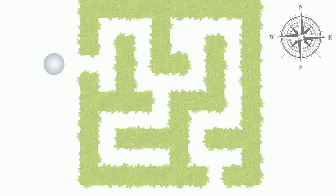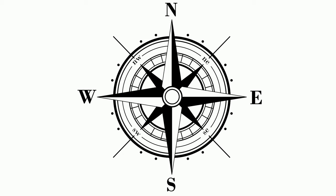You can also add directions in between the four main directions. Between north and east, you can add northeast. Between east and south, you can add southeast. Between south and west, add southwest. And finally, between west and north, add northwest. These are your intermediate directions.